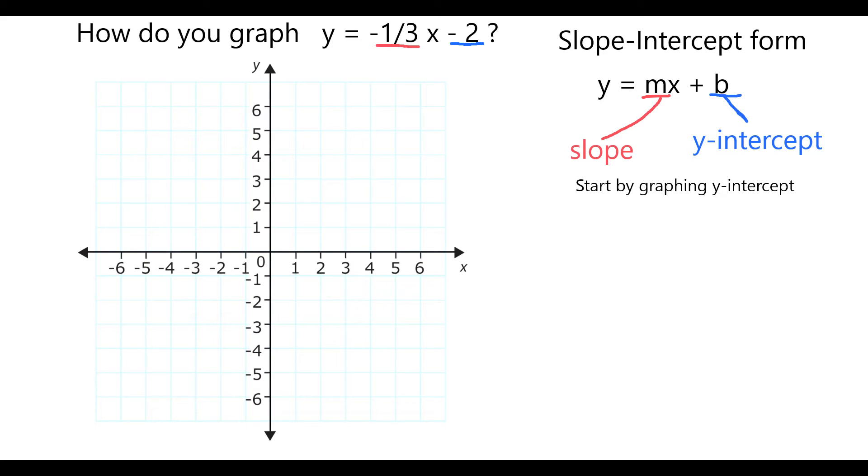Since my y-intercept is negative 2, I can graph the point 0, negative 2. It crosses the y-axis here.